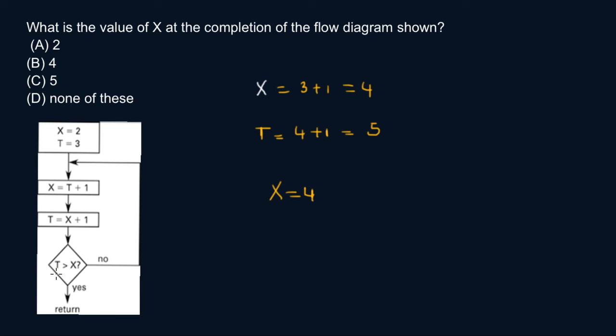Now if t was not greater than x, then you got to go back here and plug in again. Your x would be 5 plus 1, that would be 6, and then t would be 6 plus 1, that's 7, and you keep following up. Until this is satisfied, you're going to go back through the loop. But in this particular case, thankfully we are already at the point where we're satisfied with the equation, so we just return.